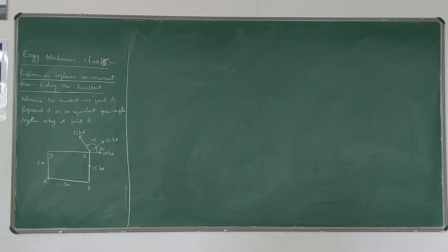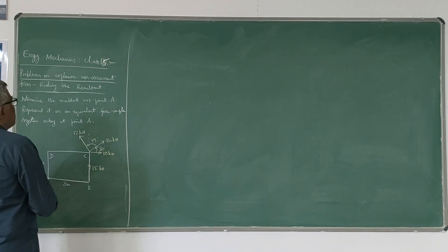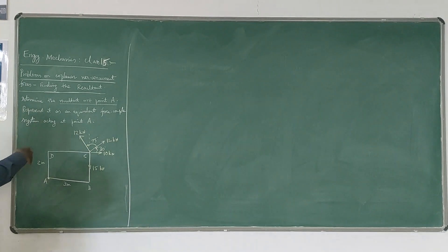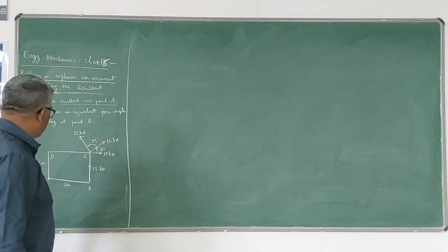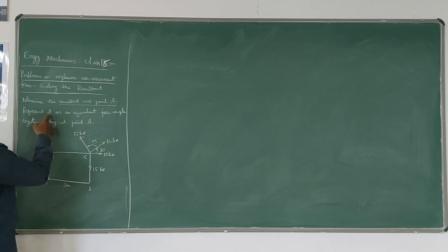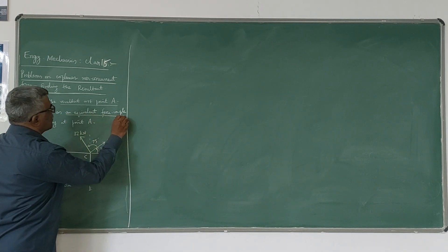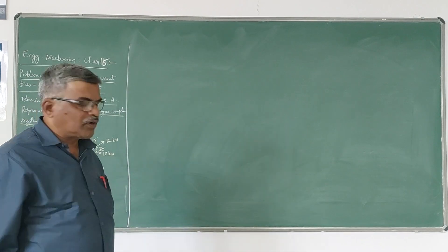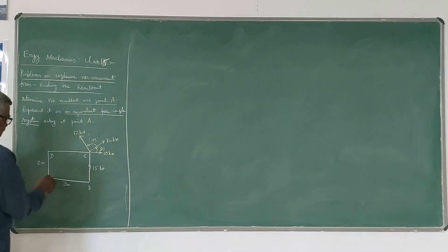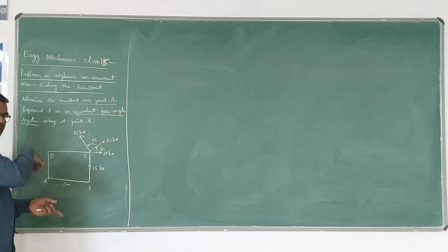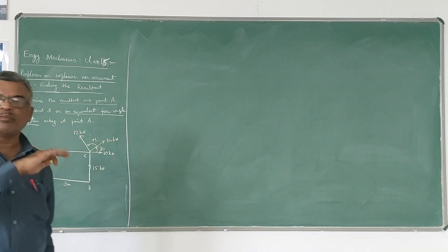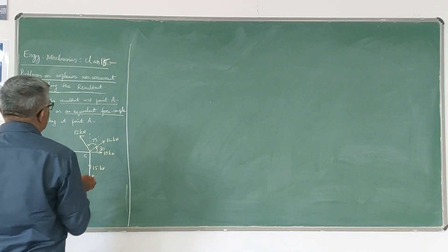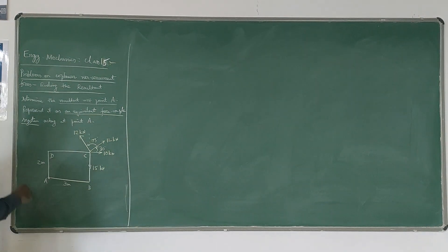In this example, the question asks us to find the position of the resultant force with respect to point A, and also represent it as an equivalent force couple system at point A. This has been explained in earlier videos. First we find the resultant force with respect to point A, then transform it to point A, which leads to a force as well as a couple — that is why it is called a force couple system.